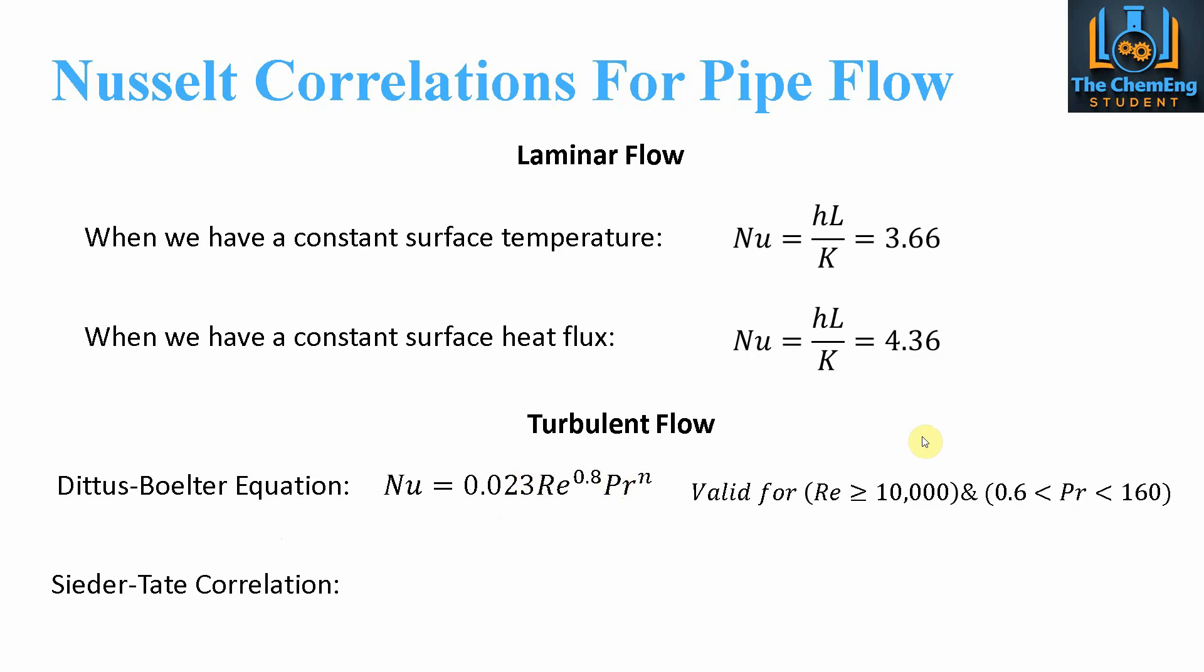And then the other correlation that you can use for turbulent flow in pipes is the Cider-Tate correlation. That's given by 0.027, Reynolds to the power 0.8, Prandtl to the 0.33, and this time it takes into consideration the ratio between the viscosity of the fluid and the surface viscosity, all to the power 0.14. This is valid for Reynolds greater than 10,000, but it is valid for Prandtl between 0.6 and 16,700, so a much bigger range for Prandtl. That's the key correlations that you would need when solving Nusselt number for your heat transfer problems.